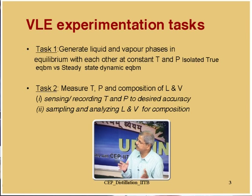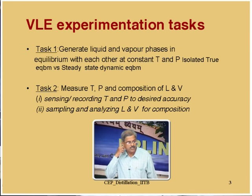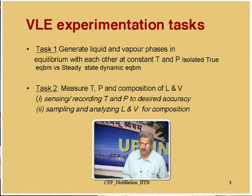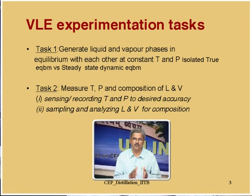Let us look at the tasks which VLE experimentation has to accomplish. There are two primary tasks. Task number one is to generate the liquid and vapour phases in equilibrium with each other — which is primary because that is what you want to measure — and one should do this by keeping fixed values of temperature and pressure. At fixed and measured values of temperature and pressure, you want to generate a liquid and vapour which are in contact with each other long enough so that they are in equilibrium with each other.